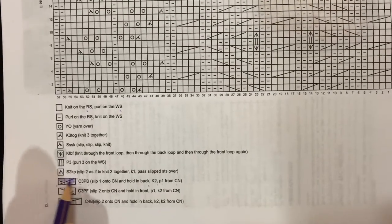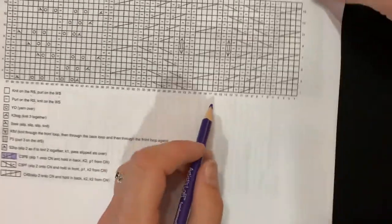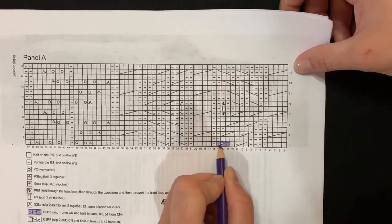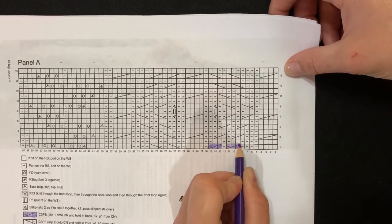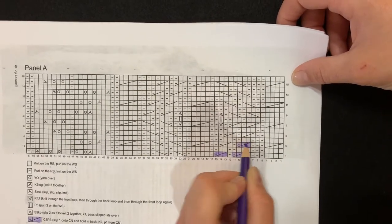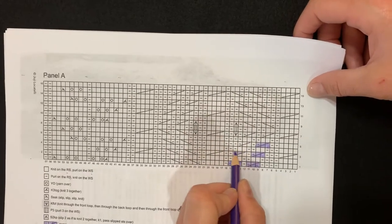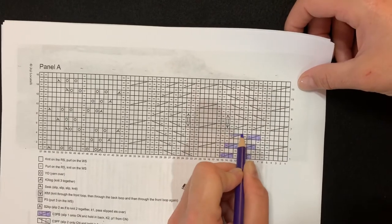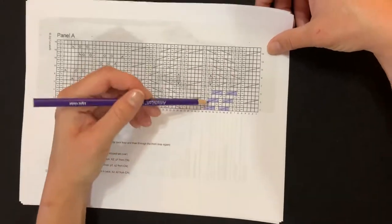So say we'll make it purple. So that means we're going to go through the chart and every time we see this, we're going to make it purple. And you can see it's already starting to make the symbol stand out to give you an idea of what the knitting is going to look like after you knit it. Already makes it stand out.